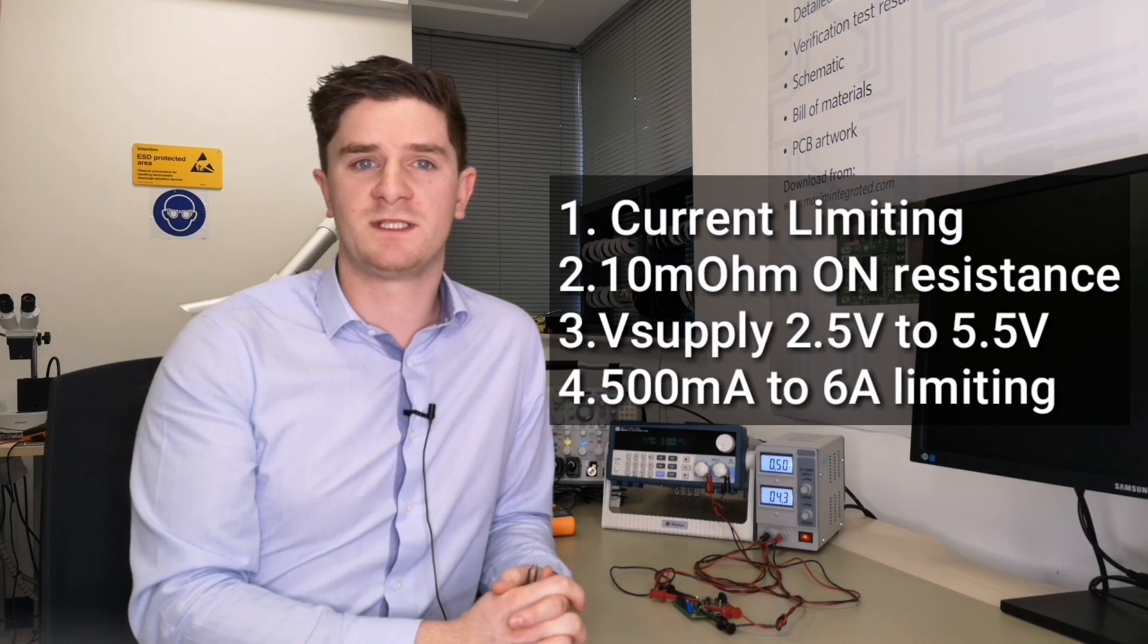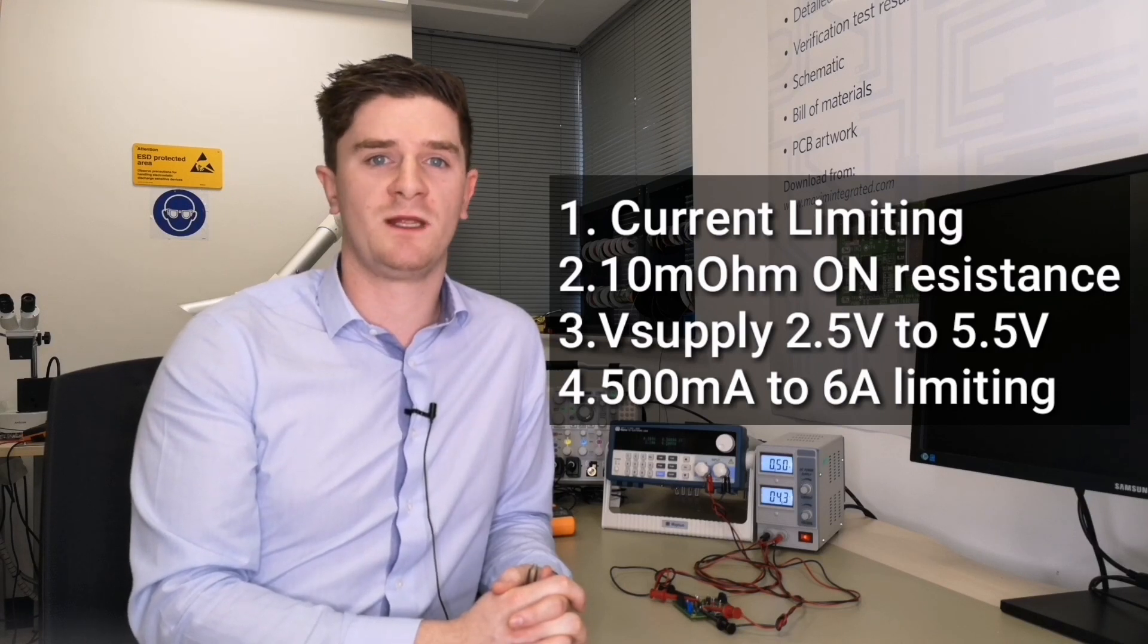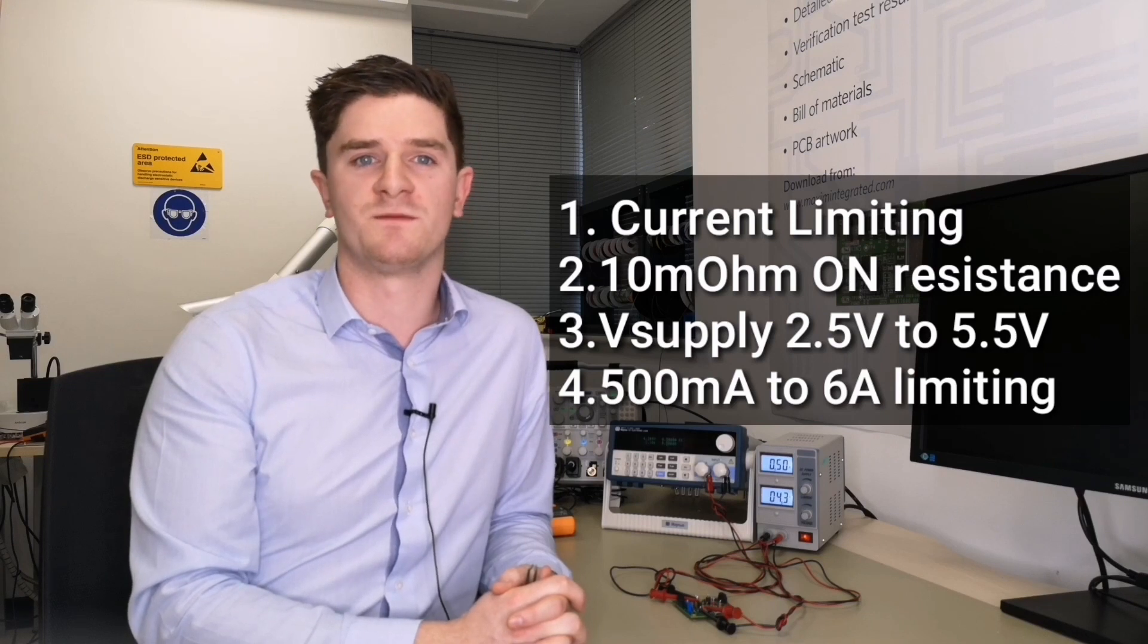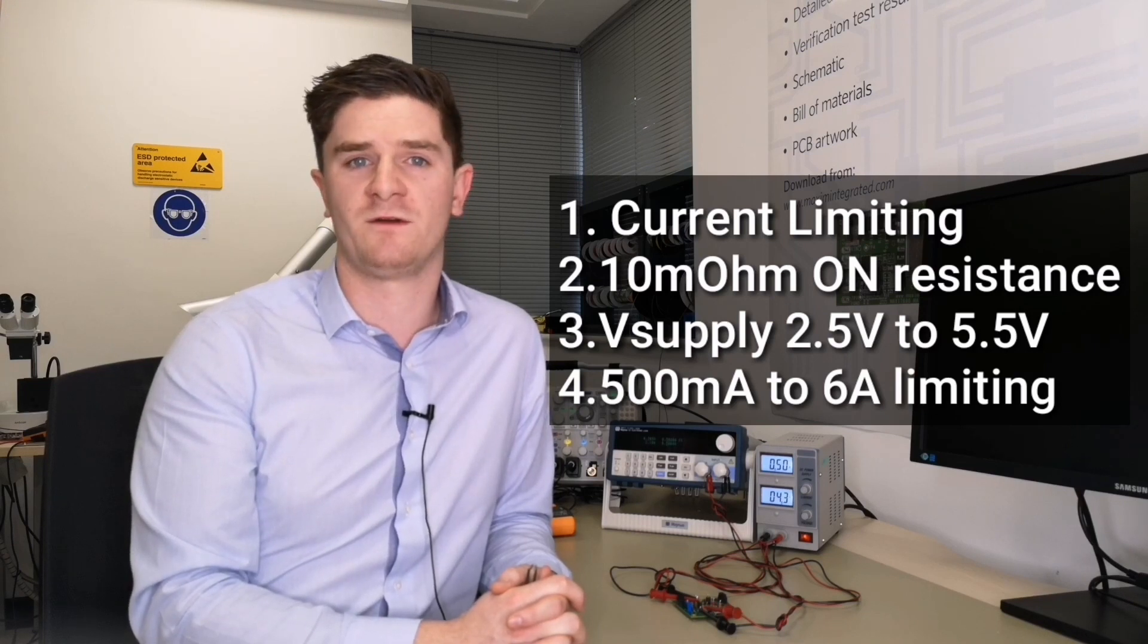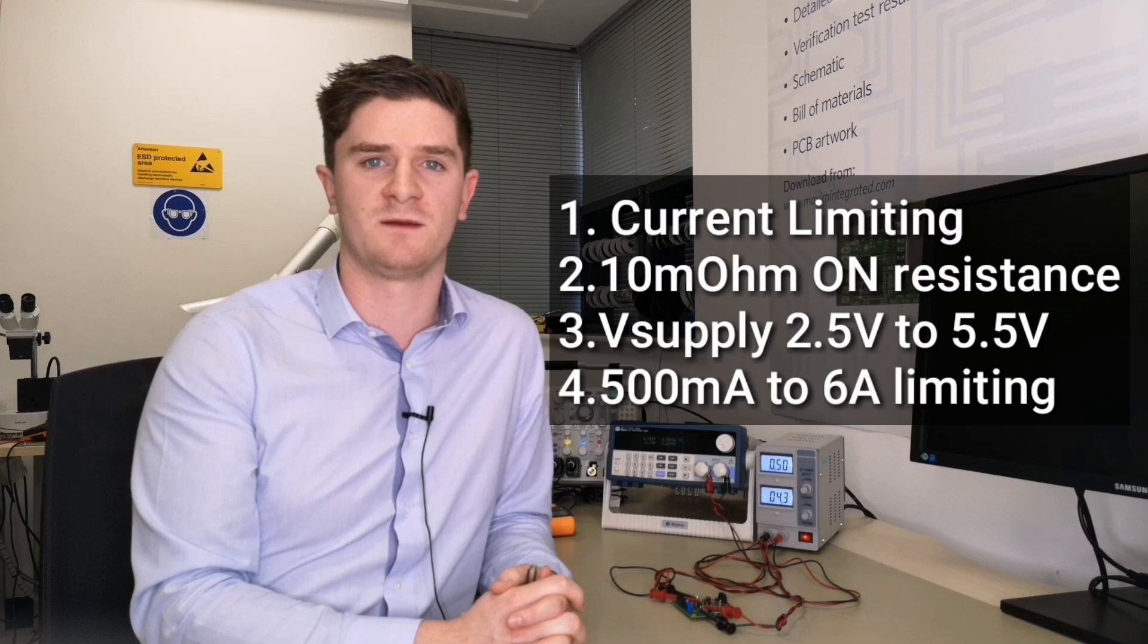The MAX2313 is a programmable current limit switch featuring internal current limiting to prevent damage to host devices when a fault occurs. It features a low 10mΩ on resistance and operates from 2.5 volts to 5.5 volts with limiting from 500mA to 6A.